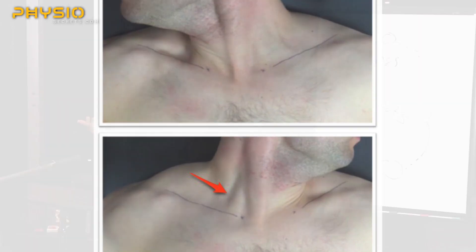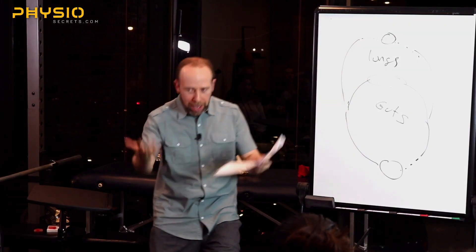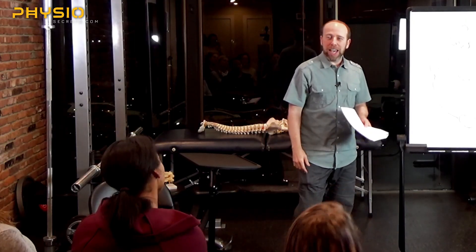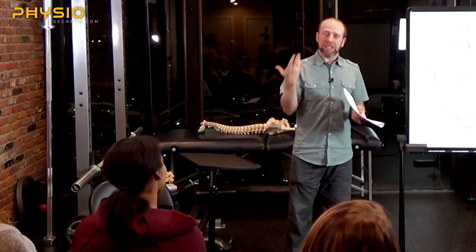So what do you treat? They have thoracic outlet syndrome. They come in and say, my doctor told me I have thoracic outlet syndrome, and my first rib is blah, blah, blah. And you say, that's nice, and you go treat the scalene complex.